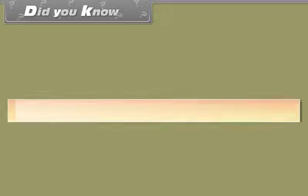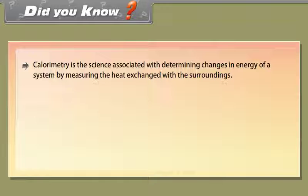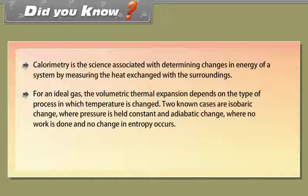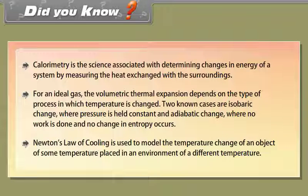Did you know? Calorimetry is the science associated with determining changes in energy of a system by measuring the heat exchanged with the surroundings. For an ideal gas, the volumetric thermal expansion depends on the type of process — two known cases are isobaric change (constant pressure) and adiabatic change (no work done and no change in entropy). Newton's Law of Cooling is used to model the temperature change of an object placed in an environment of different temperature.